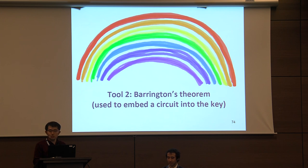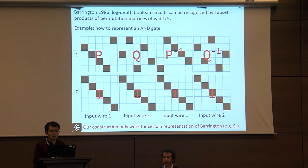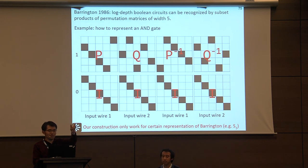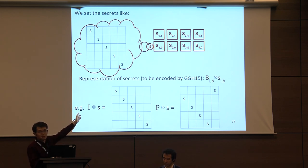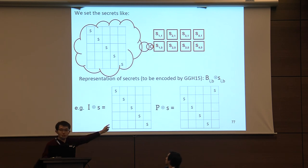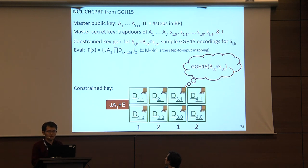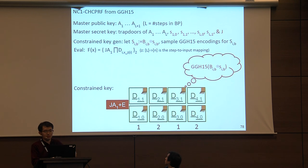The second tool is Barrington's theorem to embed the circuit into the key. It converts a circuit into a matrix product where identity and non-identity matrices multiply together — identity recognizing one, non-identity recognizing zero — so you can put matrix structure into the key. In the normal mode we put identity matrices tensored with s; in constrained mode it becomes some permutation matrix tensored with s, following Barrington's theorem.